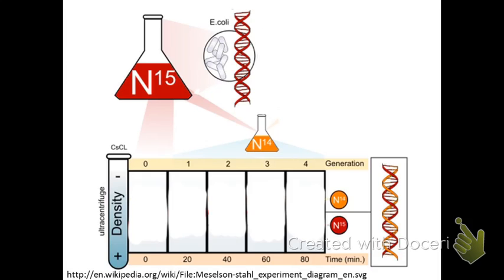And so E. coli replicates very quickly, and so right away they spun these E. coli in a density column and saw that they were 100% a single band, a heavy band of density. After another generation, about 20 minutes later, they had again a single band of density, but now it was lighter.